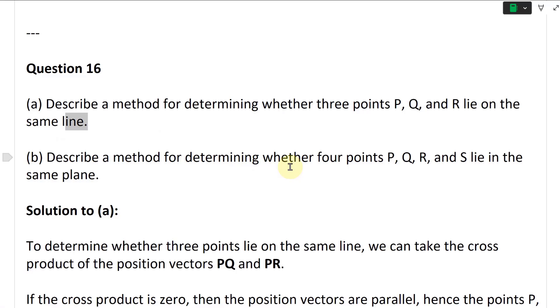Then part B says, describe a method for determining whether four points P, Q, R, and S lie in the same plane. So here, describe a method for determining three points. So this is a solution to A.